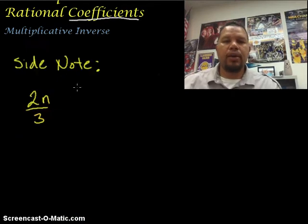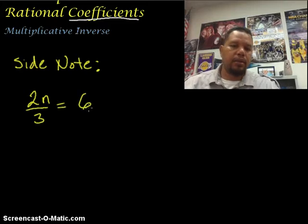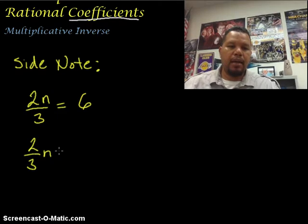Here's a quick side note about rational coefficients. I can have an expression like this, where it says 2 times n divided by 3 equals some number, 6. Or I could have 2 thirds times n equals 6. These mean exactly the same thing. So we would just look at it as a fraction times a variable in both cases. So we will still use the multiplicative inverse to solve or to isolate for n. I just wanted to make sure that you see the two different notations and know that they are equivalent.